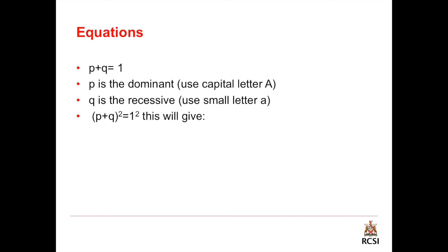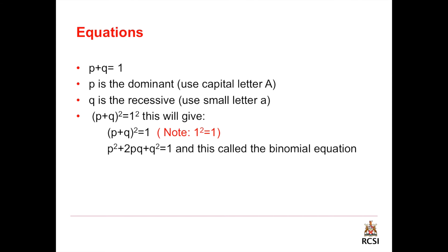If we square both sides of the equation p plus q equals 1, this gives us — due to mathematical principles — p squared plus 2pq plus q squared equals 1, and this is called the binomial equation.